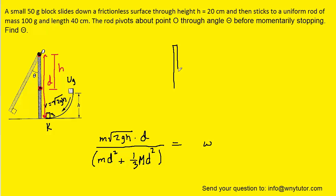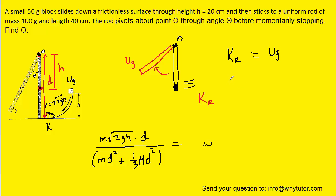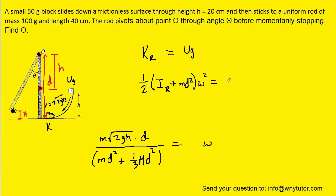In phase three, we have the rod with the block stuck to its bottom, both moving and rotating about the pivot O. At that moment we would have rotational kinetic energy, and then as the rod swings up to its maximum height, all of that rotational kinetic energy is going to be converted back into gravitational potential energy. Through conservation of energy we can set those two energies equal to one another. Rotational kinetic energy is equal to one-half times the rotational inertia times the angular speed squared.